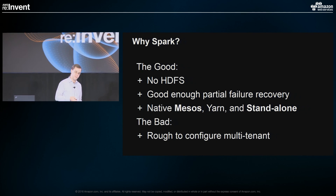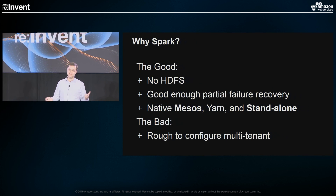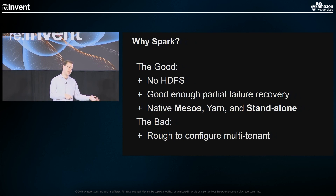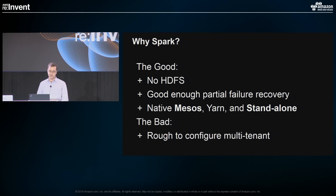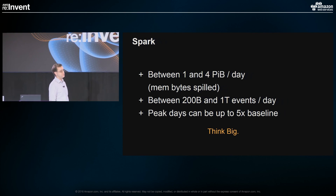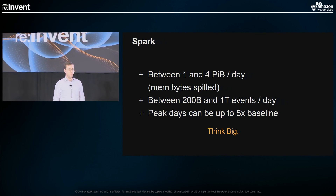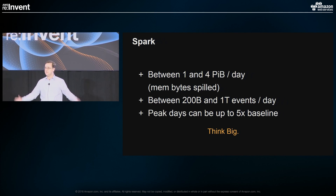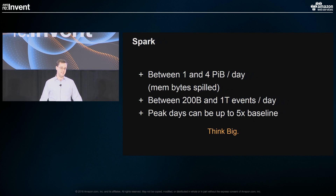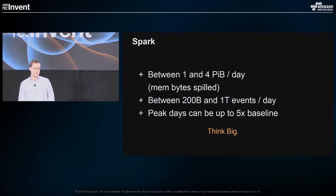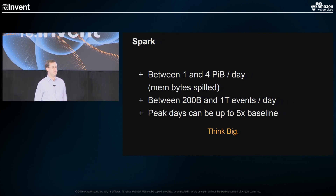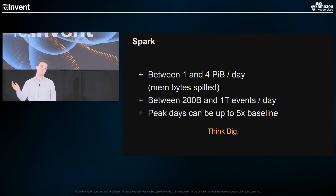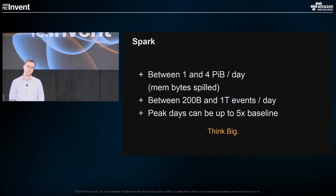You need to do proper containerization to make sure Spark running on a heterogeneous spot cluster understands the resources it has available. Memory is another component requiring a lot of configuration changes — making sure Spark properly understands the difference between heap memory, direct memory, and page cache is important in a multi-tenant environment. In terms of data volume, Spark has a cool metric called memory bytes spilled. We typically push between one and four petabytes a day, which comes to between 200 billion and a trillion events per day. Peak days can be up to five times baseline, so with our Spark cluster we can easily grow on spot up to five times our baseline load and then scale back down.